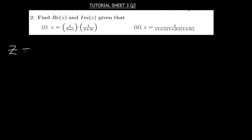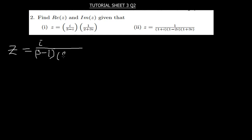I'm going to start with the first one. So z is equal to i over 3 minus i. When I multiply i times 1, I get the same i on top. And then when I multiply 3 minus i, I will get something like 2 plus 3i.